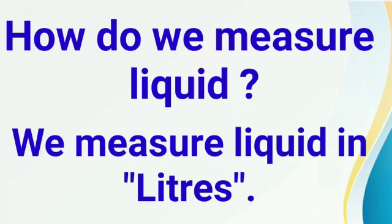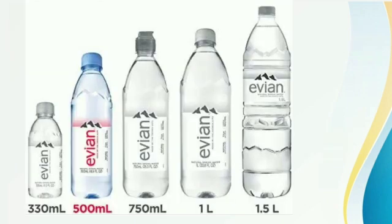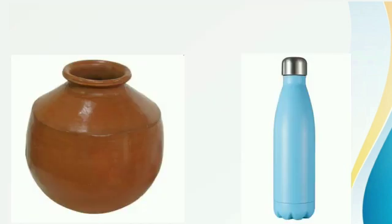Very good! We measure liquid in liters. Here we have five bottles of different sizes, so their capacity to hold water is also different. As we can see, we have the smallest bottle having 330 ml of water and the biggest bottle which has 1.5 liters of water.